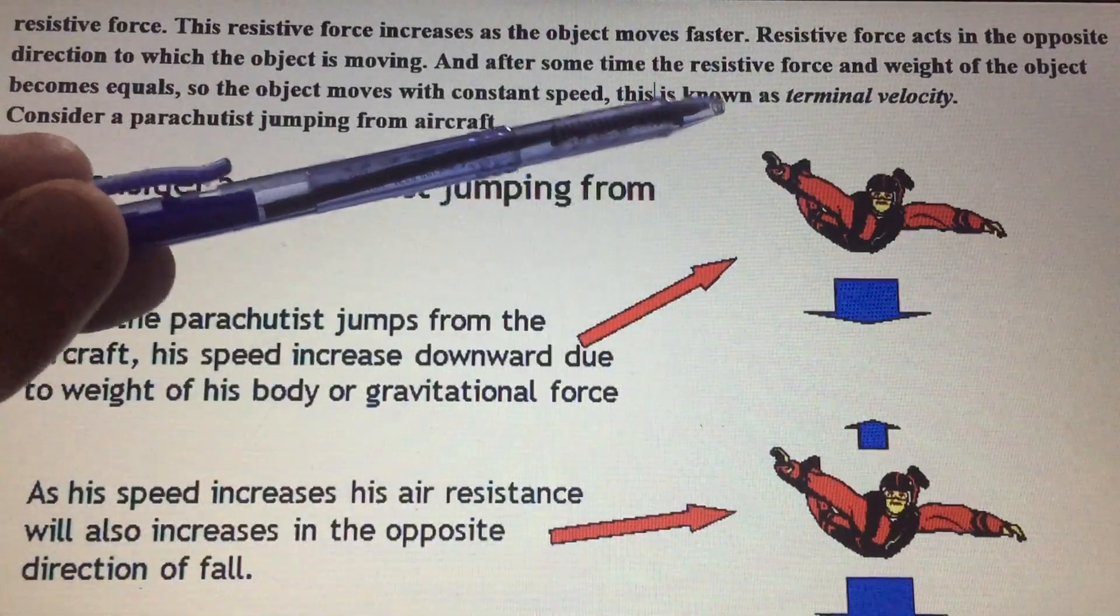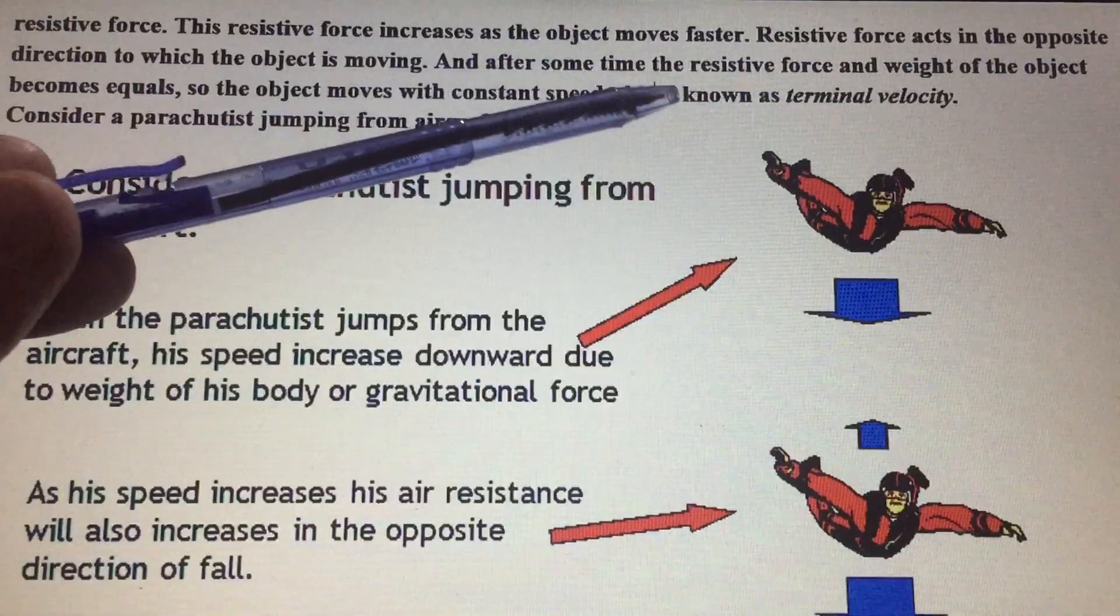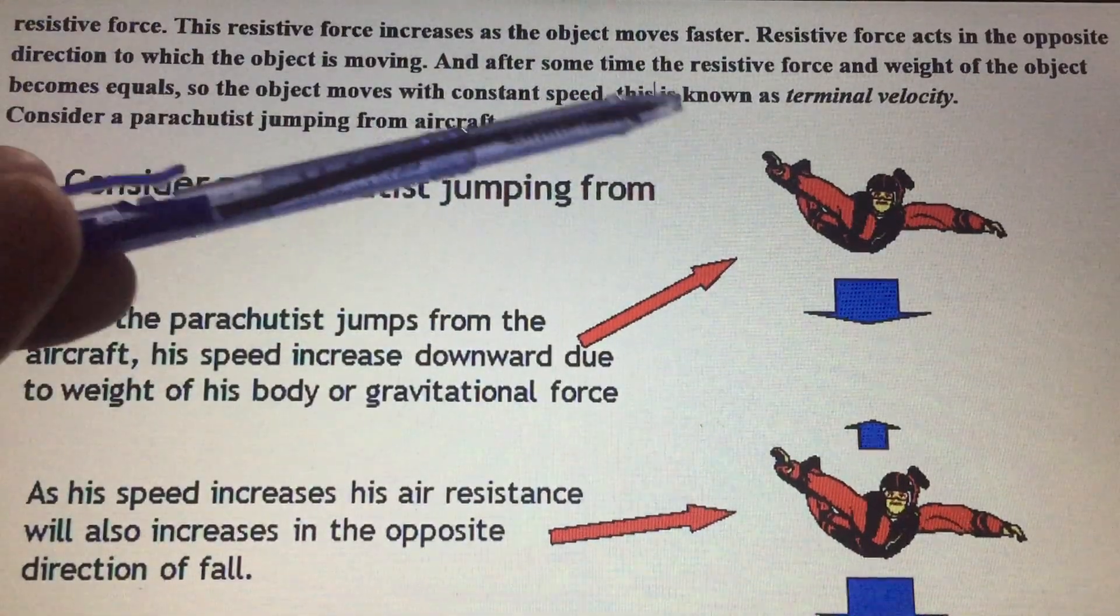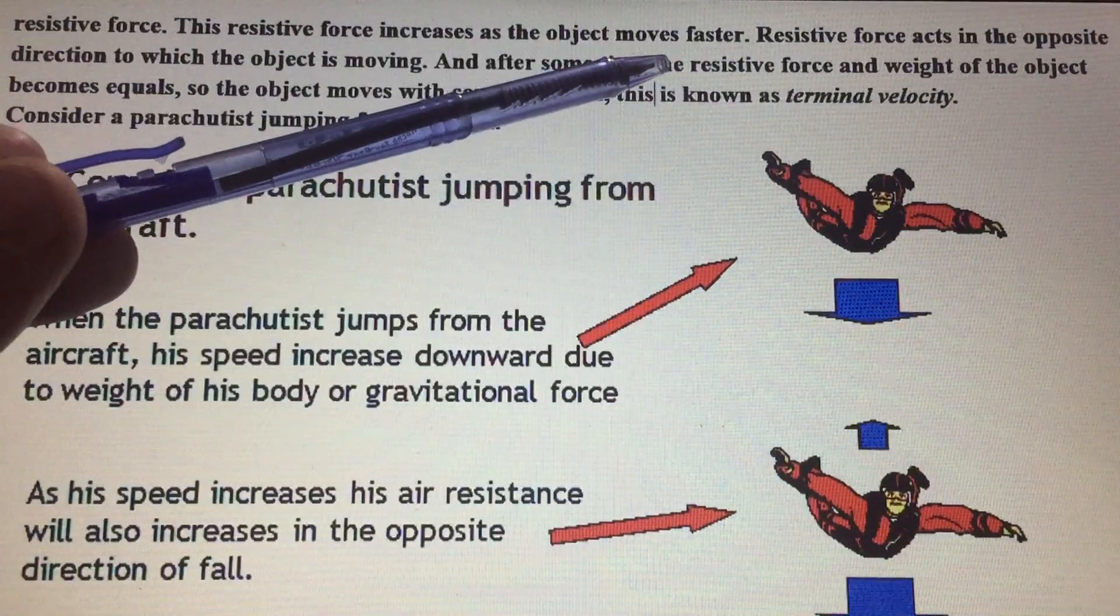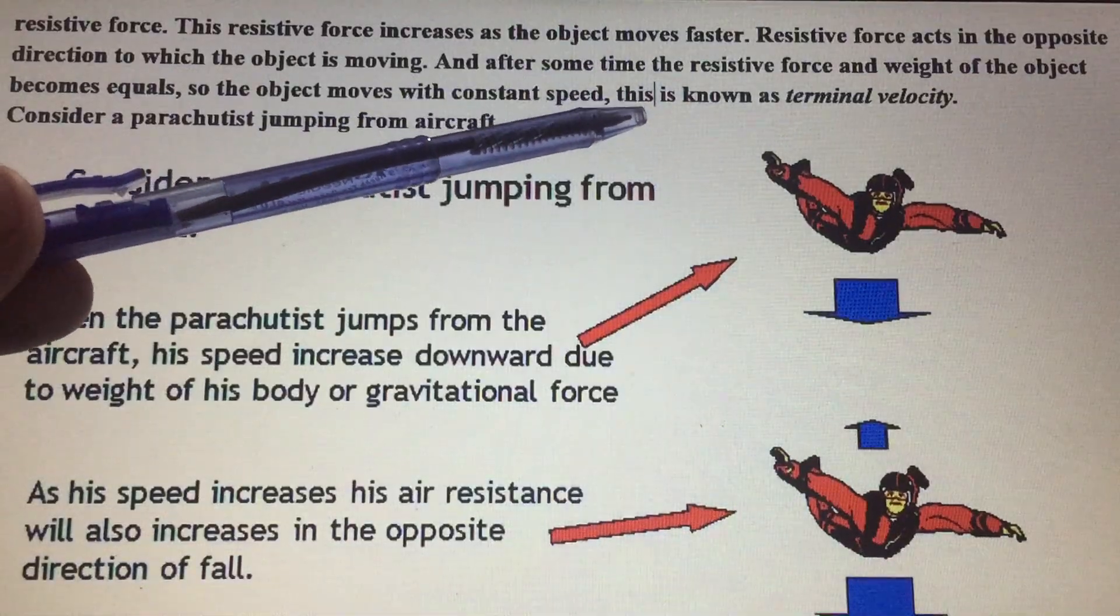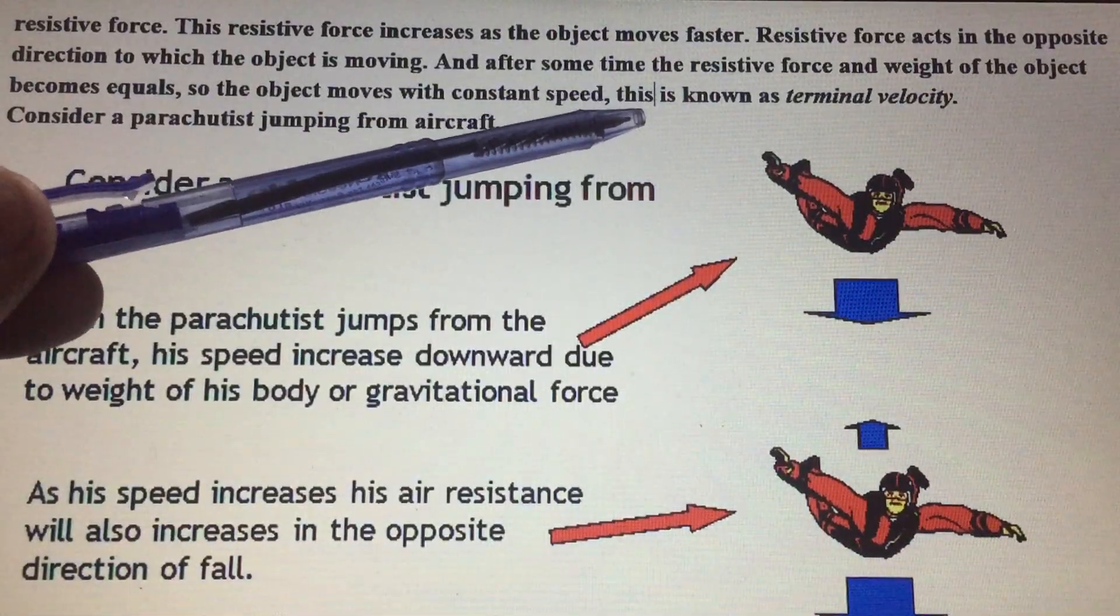What is terminal velocity? When an object falls, against its weight there is an opposing force called air resistance, which balances the weight.